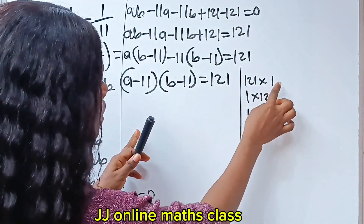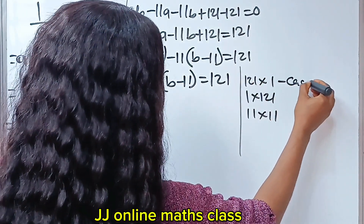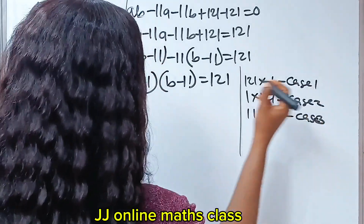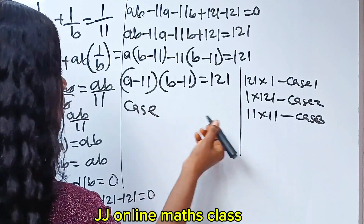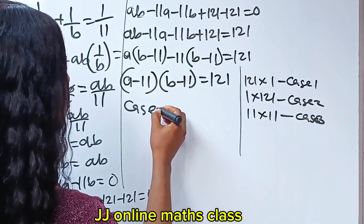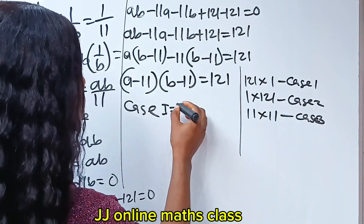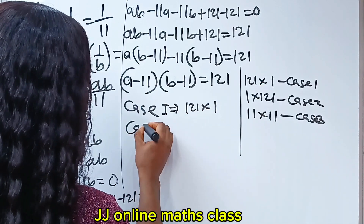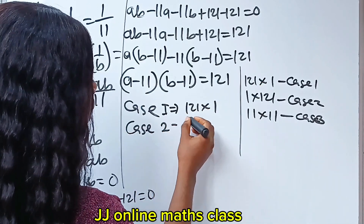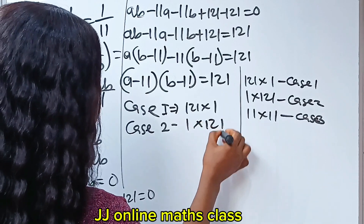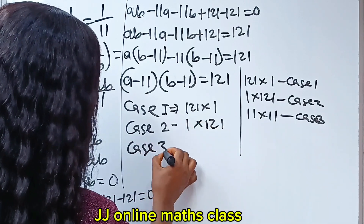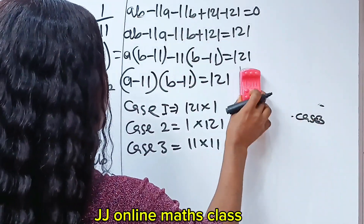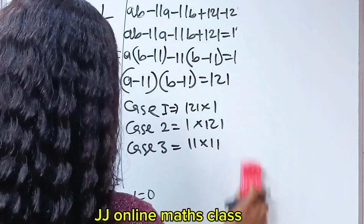So if we choose case 1, that is 121 times 1; case 2 is 1 times 121; and case 3 is 11 times 11. Now let's write it here so I can use this side of the board. Case 1: 121 × 1. Case 2: 1 × 121. Case 3: 11 × 11. Let's continue.